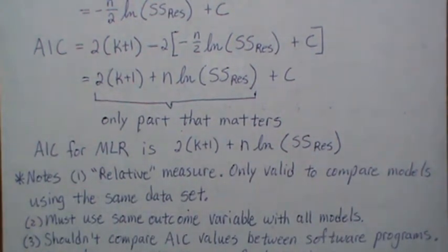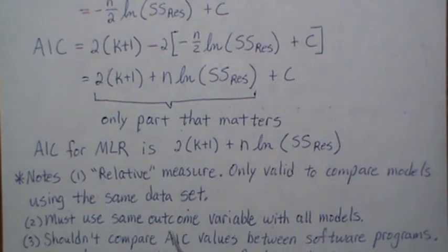Sometimes we transform the Y—we might take the log of it or the nth root, some transformation—and then refit a model and have an AIC. But since that used a different outcome measure, you can't compare it with models that use the original outcome variable Y. You have to be careful there.